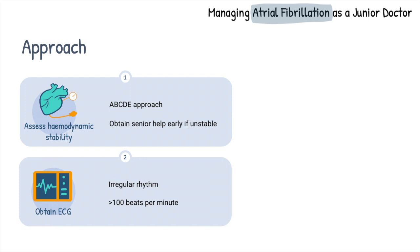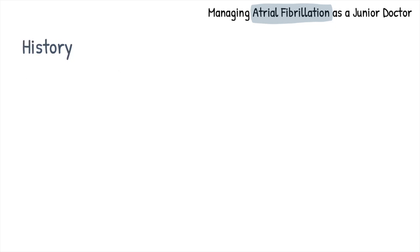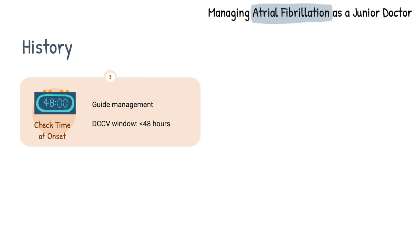AF is defined on the ECG as loss of the normal P wave with irregularly irregular QRS complexes. The rate is commonly quite fast at more than 100 beats per minute. Now on to history — there are a few important aspects of the history relevant to AF. Firstly, check the time of onset of AF or symptoms.